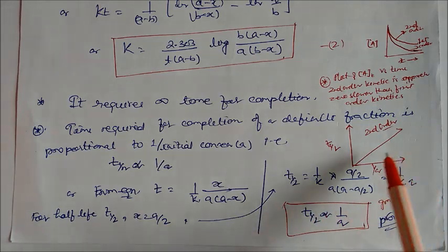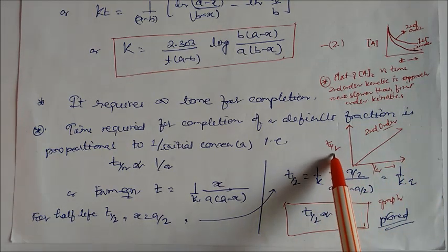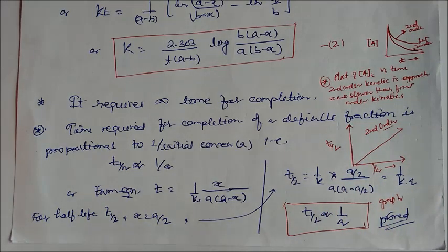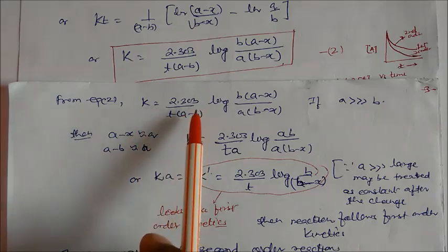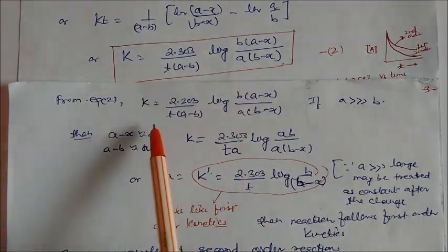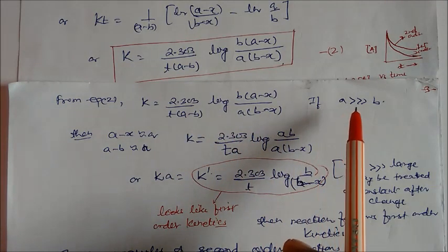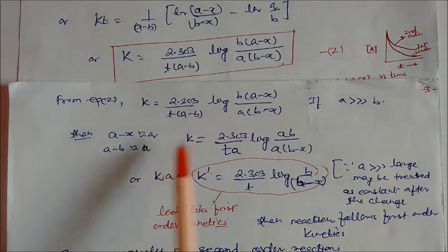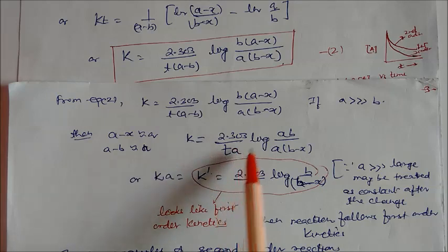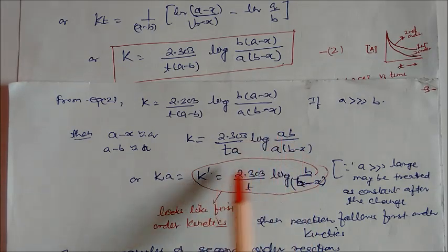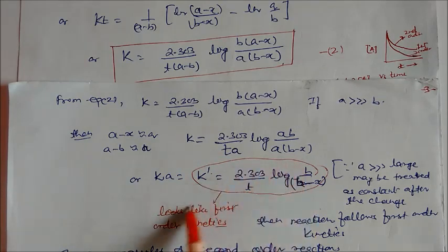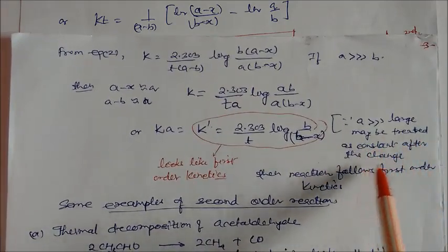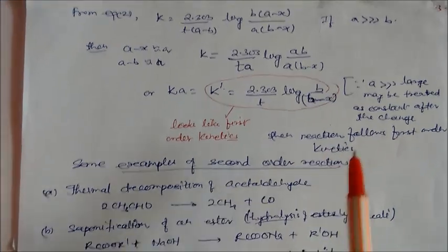If you plot half-life versus concentration, you will get a straight line — this is characteristic of second order reaction. From equation 2, if concentration A is much greater than B, then A−x is approximately equal to A, so K×A becomes a constant. In this case, the reaction follows first order kinetics — this is called pseudo-first-order behavior.